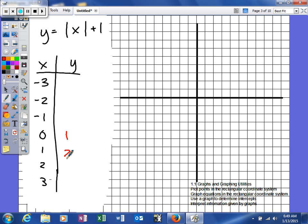When you plug in 1, you'll get 2. Negative 1 will also give you 2. For 2, you get absolute value of 2 is 2, plus 1 is 3. Negative 2 is the same thing. And if you plug in 3, you'll get 4. Same thing here.